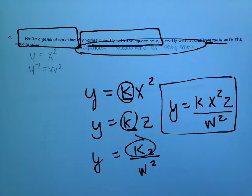So that equation right there is a general equation where y varies directly with x squared and with z, and it varies inversely with w squared.